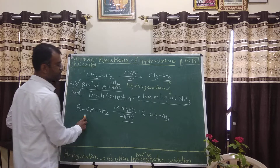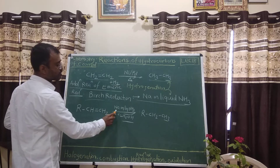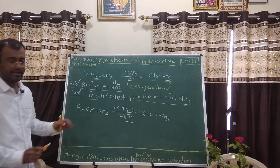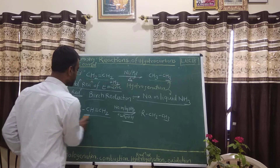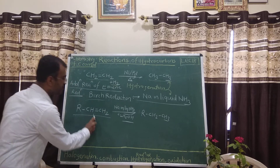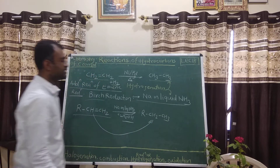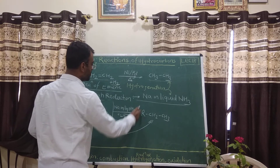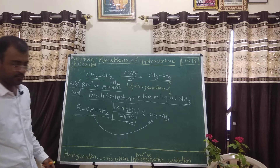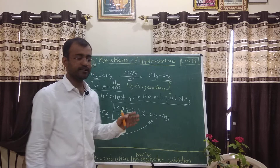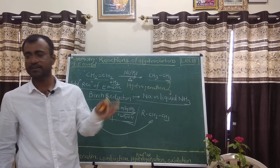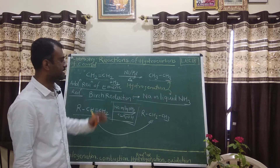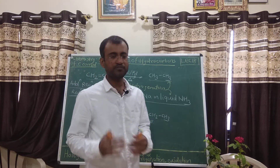In Birch reduction, alkene is reacted with sodium in liquid ammonia and in presence of alcohol like ethanol, and this alkene gives the corresponding alkene product. This is called Birch reduction. The main hero in this reaction is sodium in liquid ammonia in presence of alcohol like ethanol.